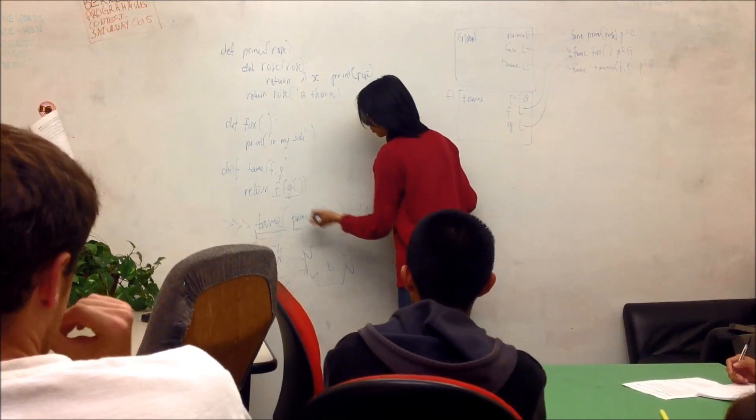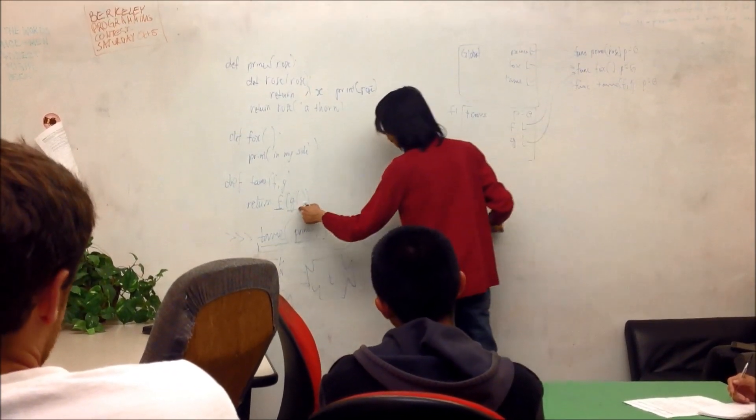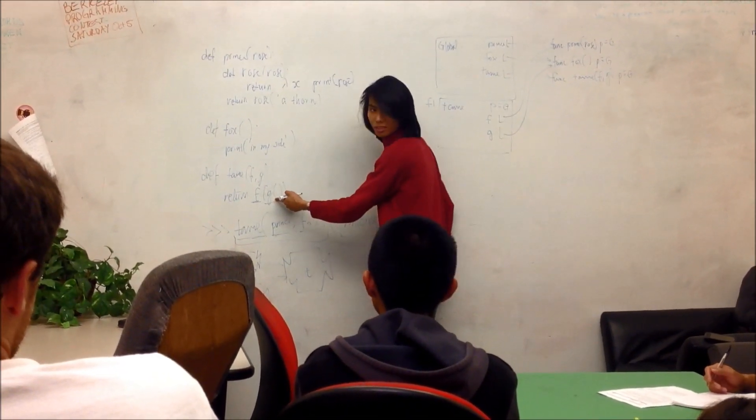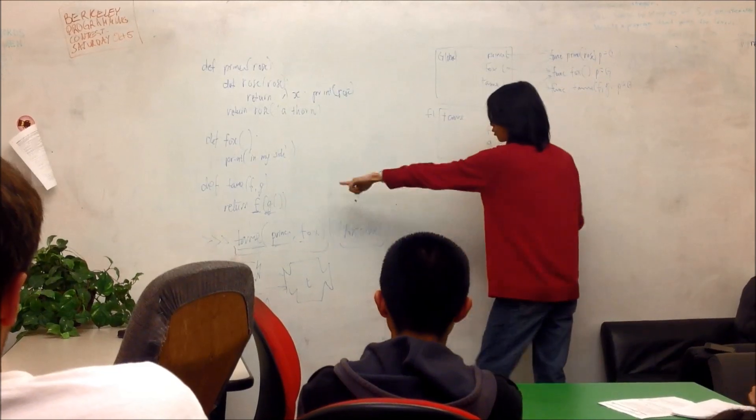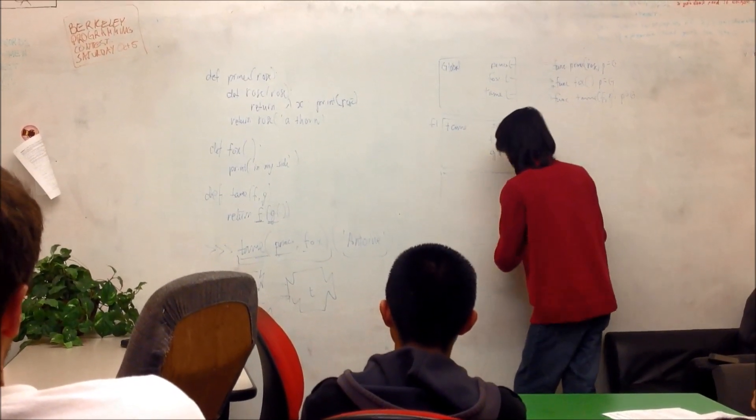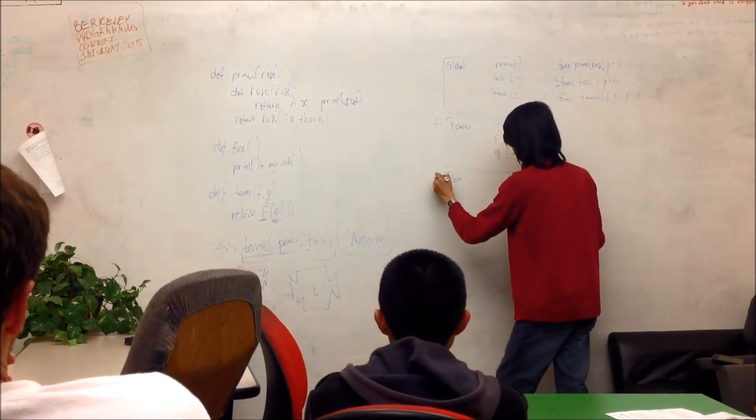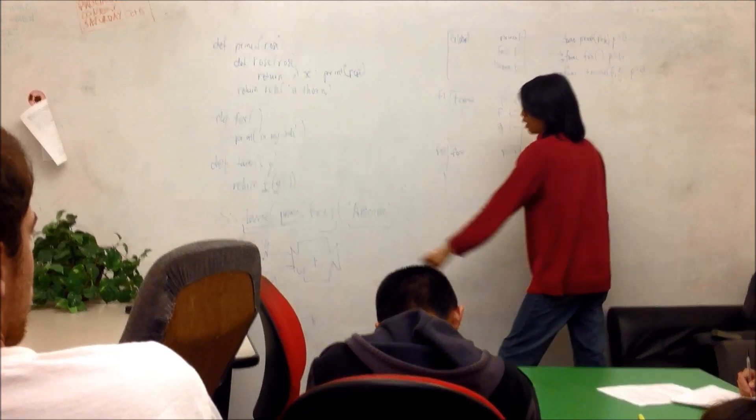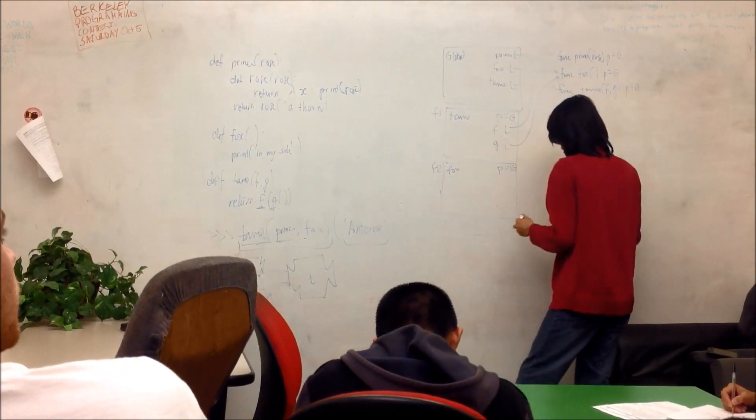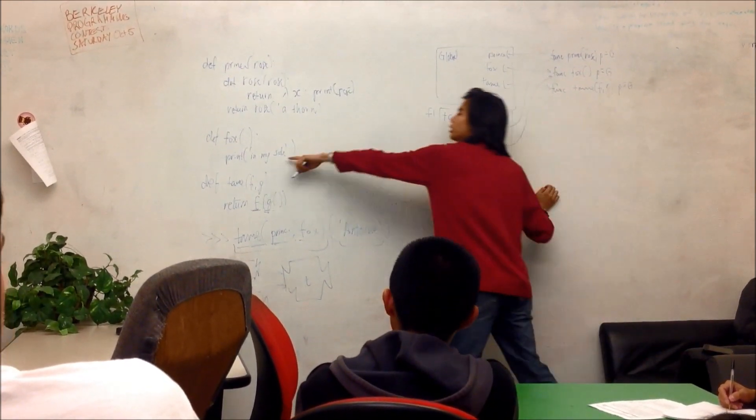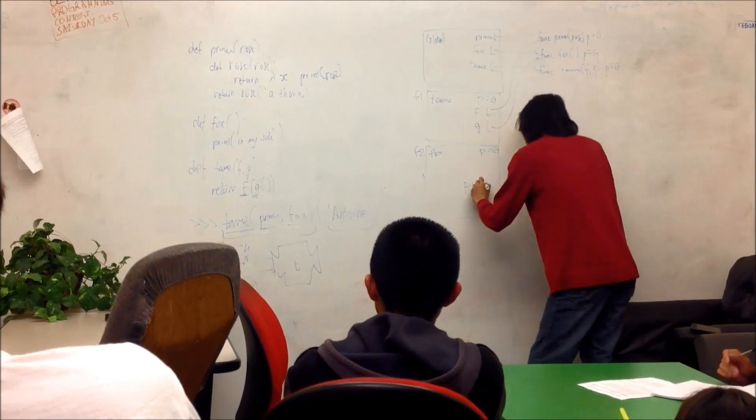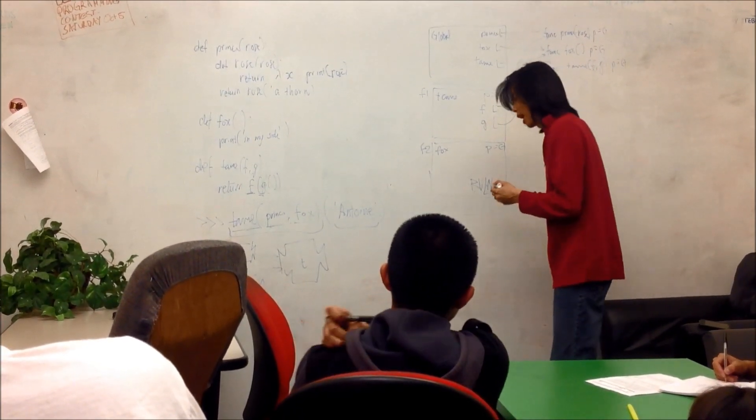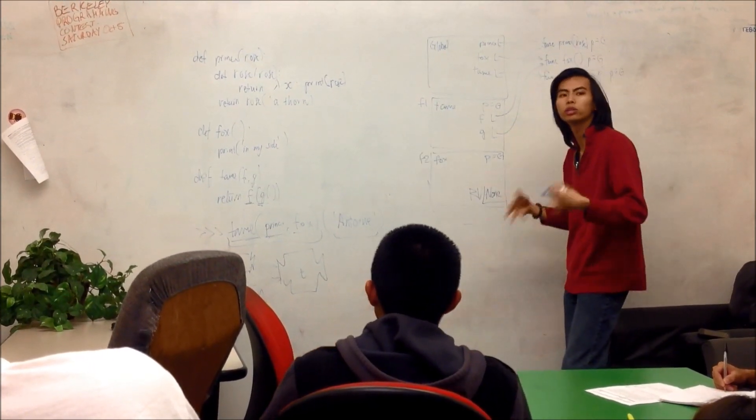That means I have to evaluate the operator and the operand. The operator turns out to be this function. The operand is a function call. So I have to draw a frame for this. I have to evaluate what g is, which turns out to be this. And then I evaluate its zero arguments. And I create a new frame. Let's call fox now. Fox gives us F2. The parent is still global because fox's parent is global. This is in the context of calling g of nothing. And then we get to pass that into f. So then we do whatever fox calls us to do. Fox says print in my side. Which means it essentially prints in my side. And its return value is none. Because printing didn't do anything. And you don't have an explicit return statement in there. Therefore we return none by default.